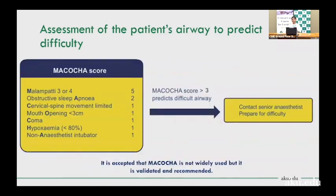The MACOCHA score is recommended by French ICUs and recent UK guidelines. It includes: Mallampati 3 or 4, obstructive sleep apnea, cervical spine movement limitation, mouth opening less than 3 cm, coma, hypoxemia below 80% oxygen saturation, and a non-anesthetist intubator. A MACOCHA score greater than 3 indicates you should prepare for a difficult airway and contact a senior experienced anesthetist.